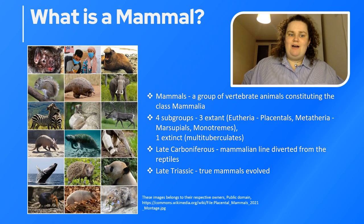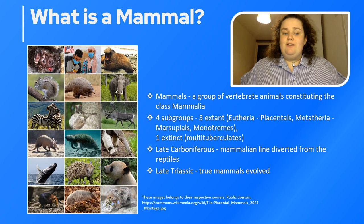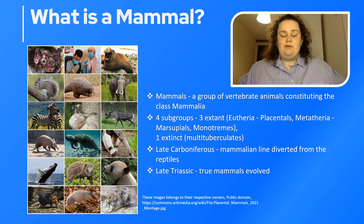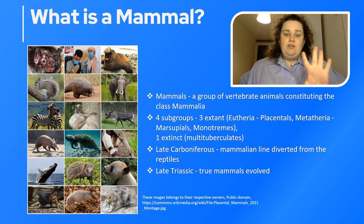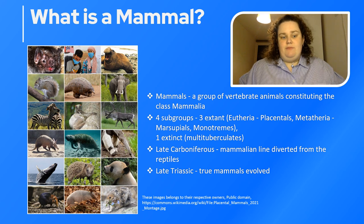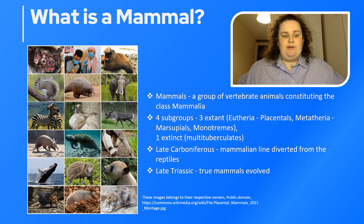What is a mammal? Mammals are a group of vertebrate animals, which means that they have a backbone, constituting the class Mammalia. Mammalia is a class because it's a group of animals with shared characteristics and ancestors. There are four subgroups, three of which are extant — meaning living today — and one of them is extinct. The three extant groups are the placental mammals belonging to Eutheria, as well as metatherians which include marsupials and monotremes.